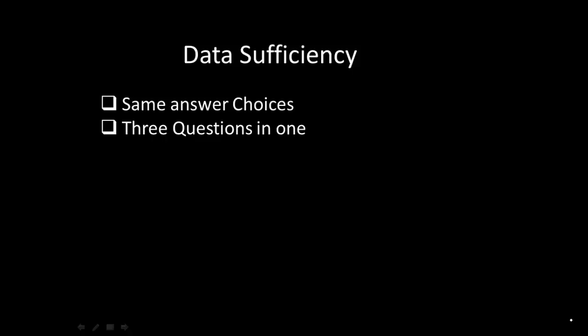You have to look at the first statement first, then look at the second statement and try to solve it, then look at both the statements together. One data sufficiency question is like three questions in one. But the advantage is that you don't have to fully solve them. If I say is x positive and you're able to make out that x is positive, move ahead. You don't have to find the accurate answer — you just have to tell me this statement is sufficient. End of story.